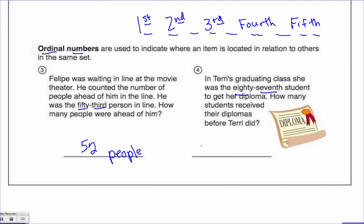If she was the 87th, that means 86 people received, or students - students would probably be a better label.